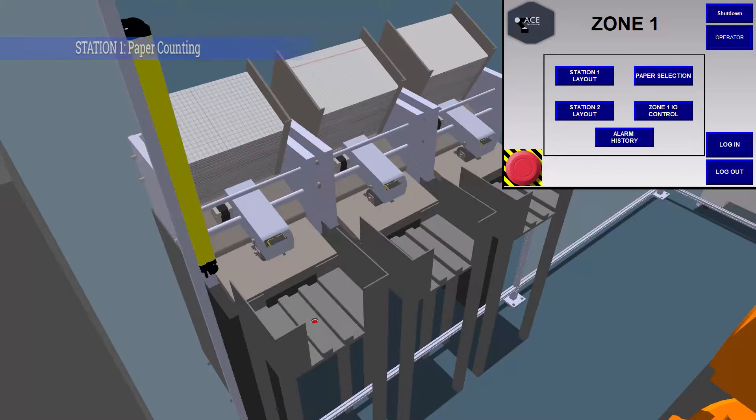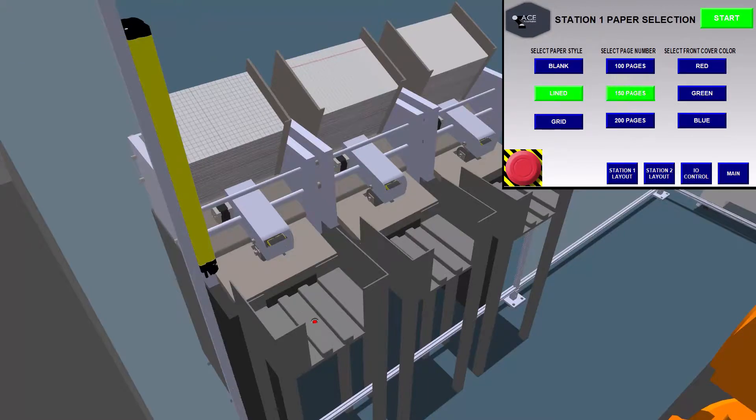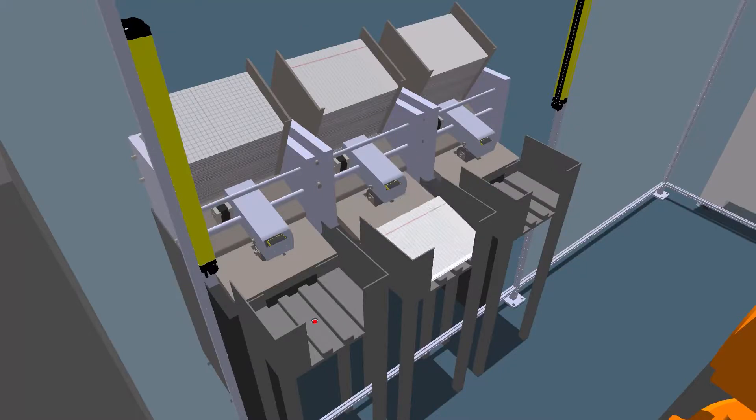At station one, you select the style of paper, the paper stack size, and the color of the cover desired by the customer, and begin the overall process.